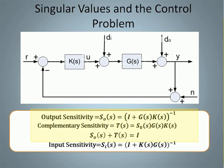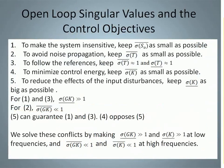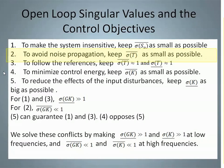It is also important to remember the definition of sensitivity and complementary sensitivity in the case of MIMO systems, as they are essential in the formulation of a robust control problem. Understanding the meaning of singular values, we can establish the following control objectives: to make the system insensitive to output disturbances and plant variations, we need to keep the largest singular value of the sensitivity as small as possible. To avoid noise propagation, we need to keep the largest singular value of the complementary sensitivity as small as possible.